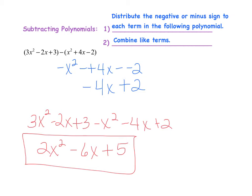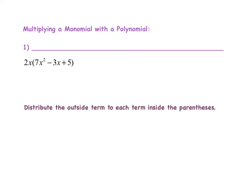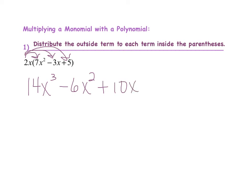Now let's move on to multiplying polynomials. The first example is multiplying a monomial with a polynomial, and there's really only one step: distribute the outside term to each term inside the parentheses. We have 2x times 7x squared, which gives 14x to the third power. Then 2x times negative 3x gives negative 6x squared. And 2x times positive 5 gives plus 10x. I don't have any like terms to combine in this example, so we're ready to move on.